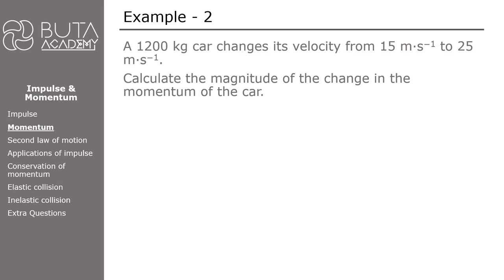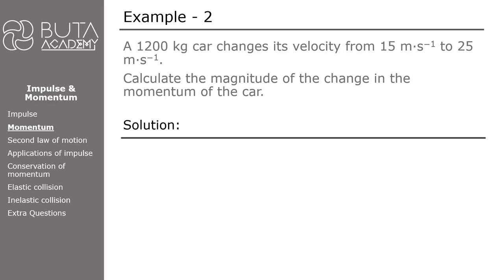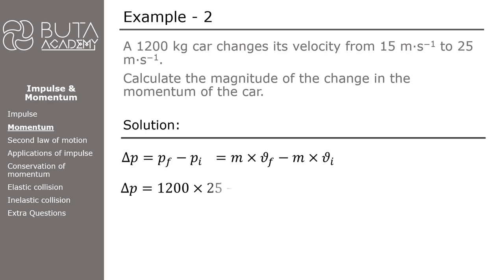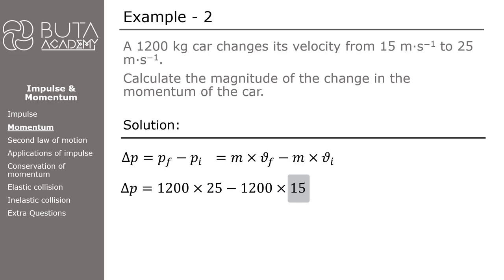In the next question, we calculate the magnitude of the change in momentum of a car of mass 1200 kg if its velocity increases from 15 to 25 meters per second. Change in momentum is delta p, which equals final momentum minus initial momentum. Momentum equals mass times velocity. With mass 1200 kg, final velocity 25 m/s, and initial velocity 15 m/s, the change in momentum equals 12000 kilogram meters per second.